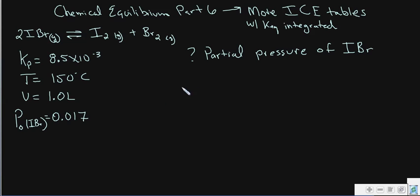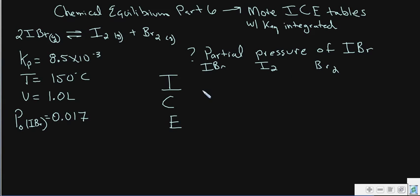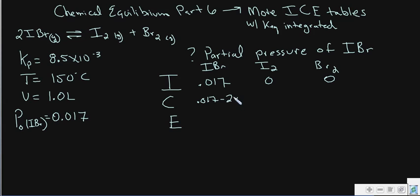Let's go ahead and set up our ICE table. We have IBr, iodine gas, and bromine gas. The initial partial pressure of IBr is 0.017 — the circle notation always indicates initial concentration — and the initial pressures of I₂ and Br₂ are zero. For the change row, since the balanced equation has 2 moles of IBr to 1 mole of each product, IBr changes by minus 2x, while I₂ and Br₂ each change by plus x.